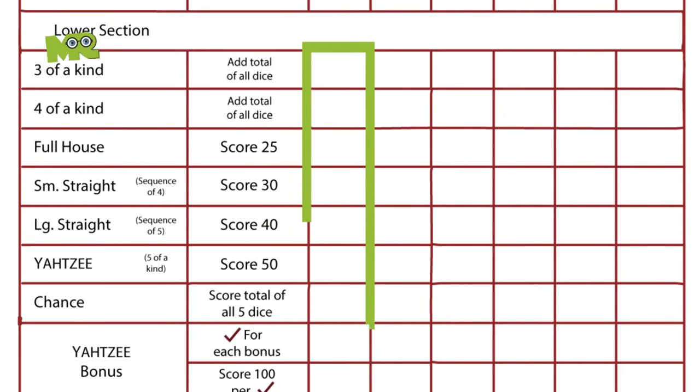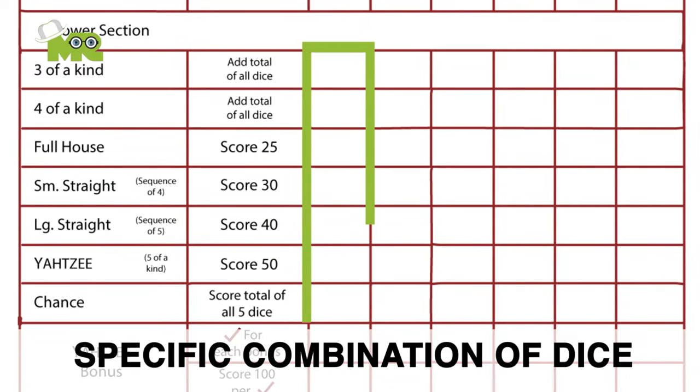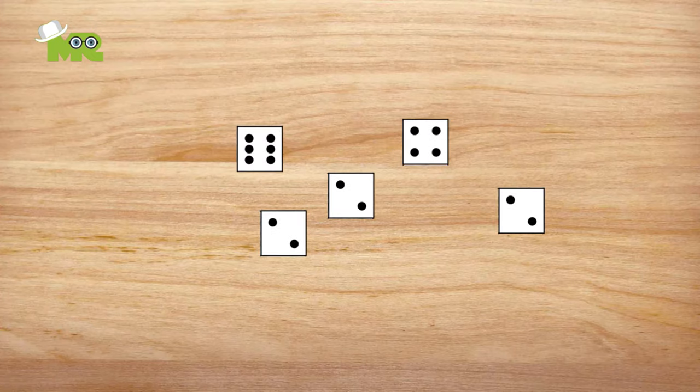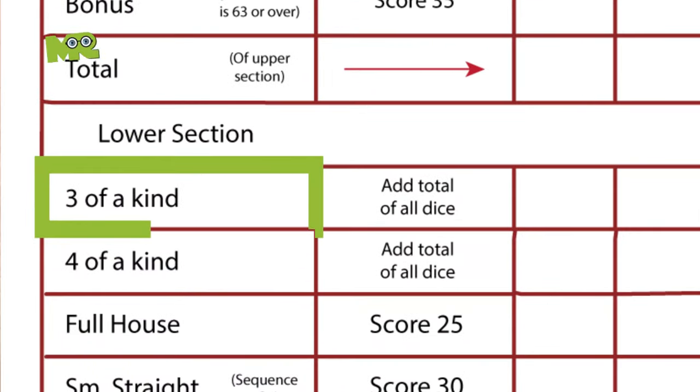The bottom seven boxes are designed to keep score of the rolls of a specific combination of dice. While adding up all five dice, if at least three of them are the same number, the three of a kind is scored.